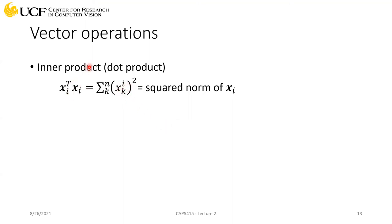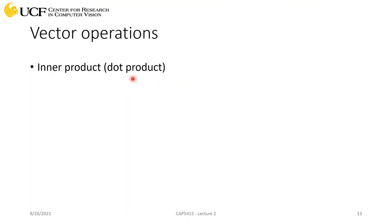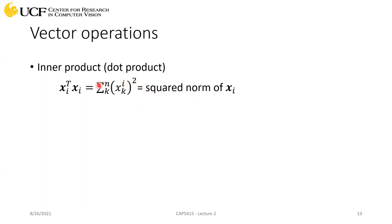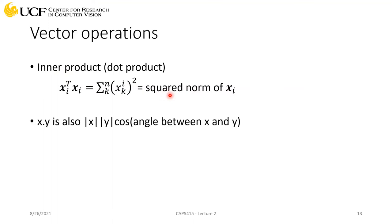The inner product between a vector and itself gives the squared norm of X, because you multiply each element with itself to get a square — and it's the squared norm because you don't have the square root that appears in the L2 norm. So if you compute the inner product between the same vector, you get the squared norm. Another important representation: dot product is also written as the magnitude of X times the magnitude of Y times the cosine of the angle between X and Y.